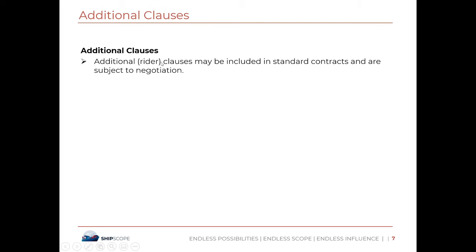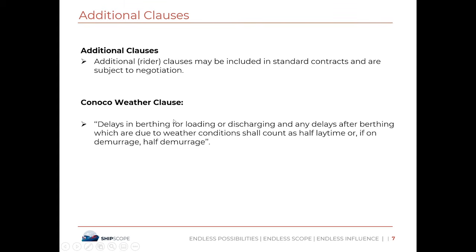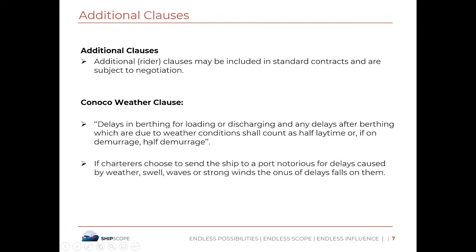Now, what are the additional clauses? These are also known as rider clauses, which may be included in the standard contract and are subject to negotiation. The first is the Conoco weather clause: delays in berthing for loading and discharging, and any delays after berthing due to weather conditions, shall count as half laytime, or if on demurrage, half demurrage. If charterers choose to send ships to ports notorious for delays caused by weather, swells, waves, or strong winds, those delays fall on them. Ports such as Falconara, Fiumicino, and Ravenna are known for weather-related delays.